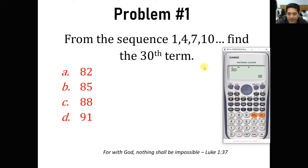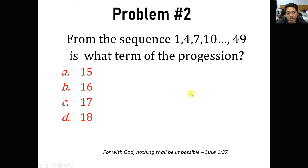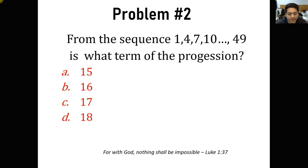So the value of the 30th term is 88. That is how we find the value of the 30th term. For the next example, we are going to reverse the problem. Problem number 2: from the sequence 1, 4, 7, 10 — 49 is what term of the progression? The problem is asking for what term is 49 in this progression.